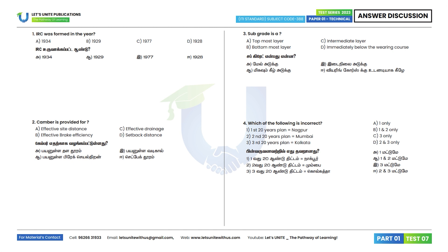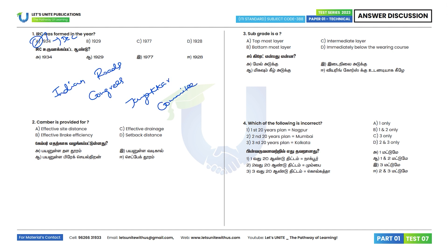First question: IRC was formed in which year? IRC is the Indian Roads Congress. It was formed in December 1934. The correct answer is based on the JAKER Committee recommendation. The JAKER Committee was formed in 1927.